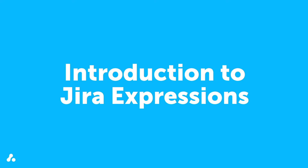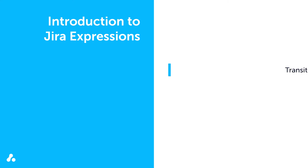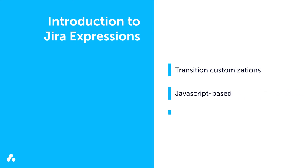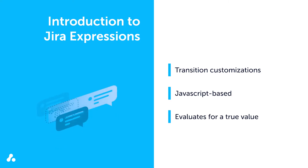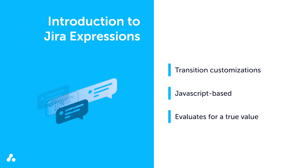Jira Expressions is a domain-specific language designed by Atlassian that allows users to write custom conditions that evaluate to true. ScriptRunner for Jira Cloud uses this language for transition customizations such as validators, conditions, and script listener conditions. It's a JavaScript-based language that evaluates for a true value. Administrators use Jira Expressions to customize validators and conditions by reading Jira information quickly.